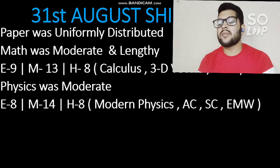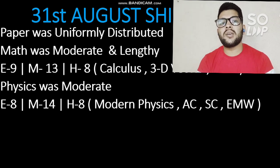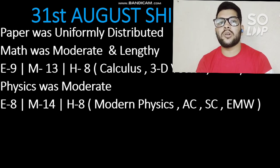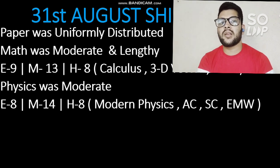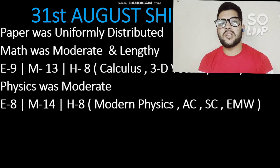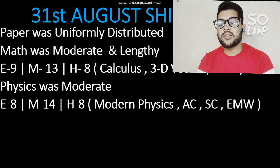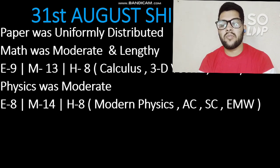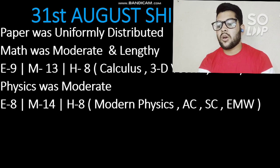Physics in Shift 1 was moderate again. Easy questions were 8, moderate 14, and hard 4. Modern physics had the highest weightage — around 5 to 6 questions per shift. Whether you're targeting the next shift or next year, prepare modern physics in detail as it gives 5 to 6 easy questions. Questions were also asked from alternating current, semiconductors, and electromagnetic waves.